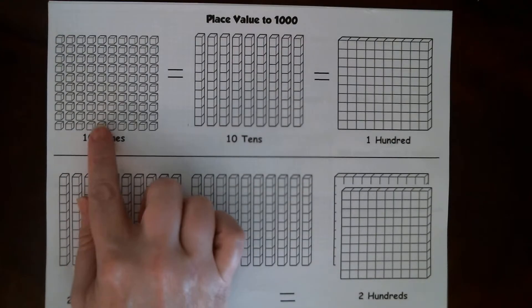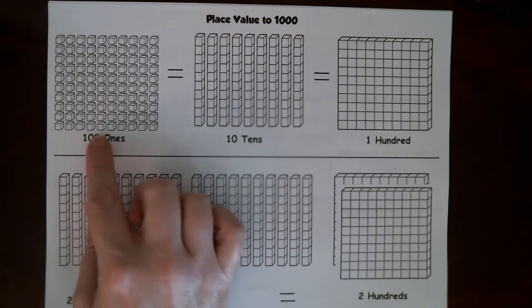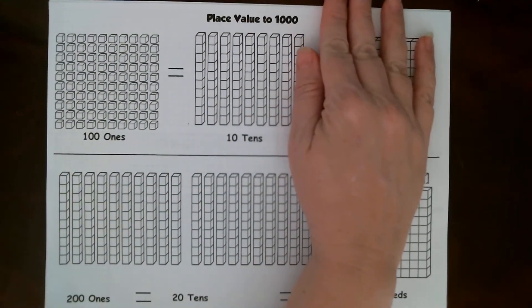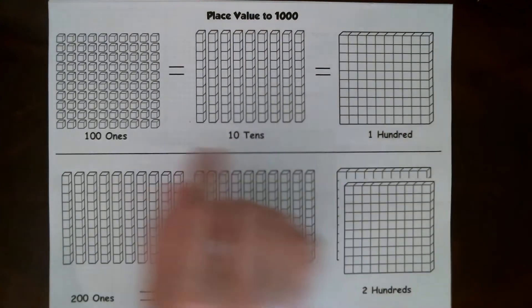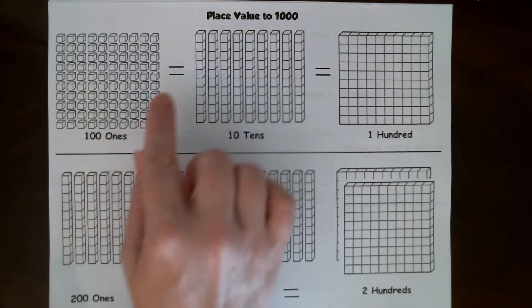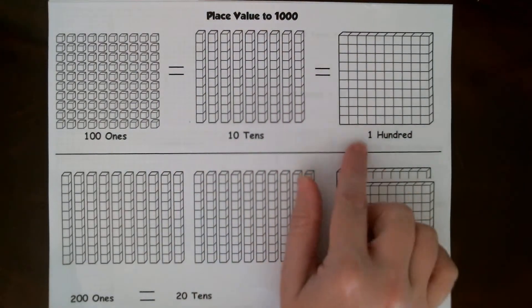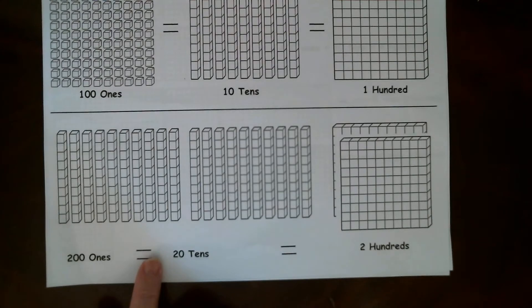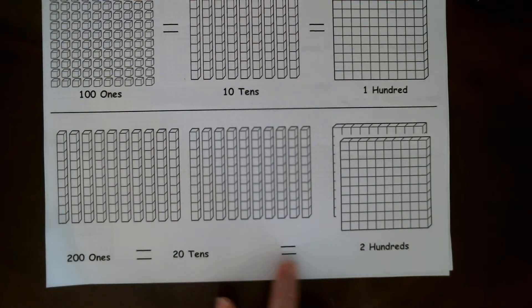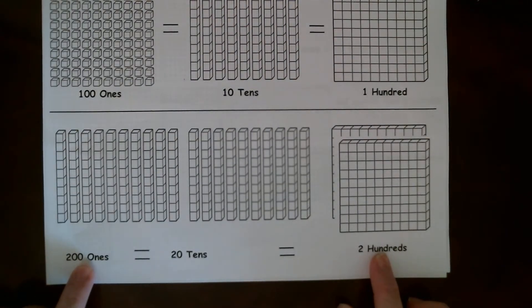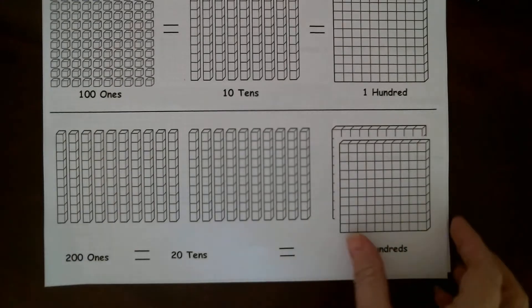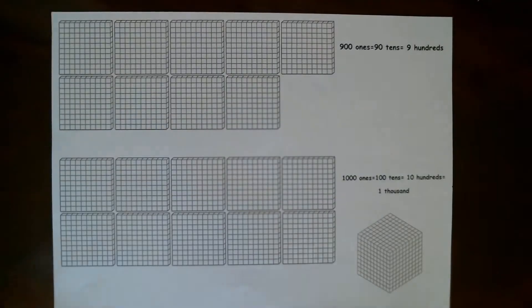It'll help you understand that if I have one hundred ones, I can stick them together first to make ten tens, and then stick those ten tens together to make a hundred. One hundred ones is the same as ten tens, which is the same as one hundred. Two hundred ones is the same as twenty tens, which is the same as two hundreds. I have them going all the way up to one thousand, and I will send these out to your parents.